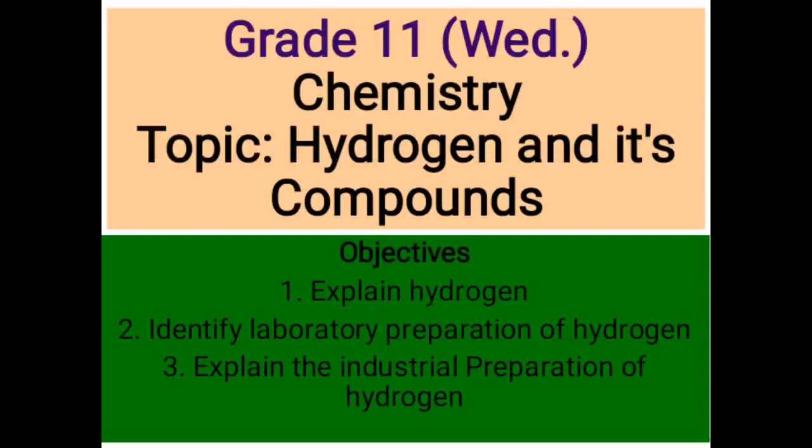Today our topic is hydrogen and its compounds. We have objectives. At the end of this class, you should be able to define or explain hydrogen, identify laboratory preparation of hydrogen, and explain how you can prepare hydrogen in the industry. These are the three objectives we have in this lesson.